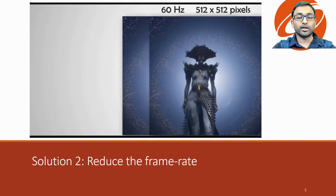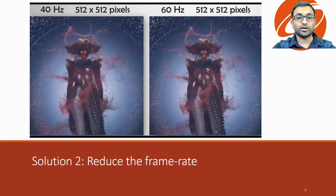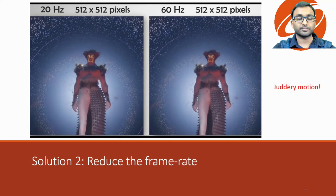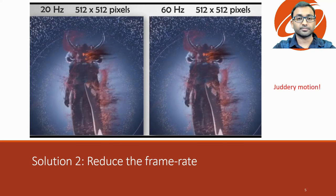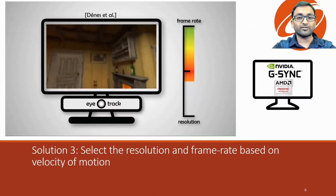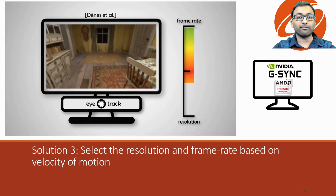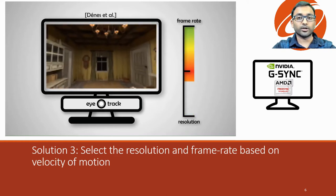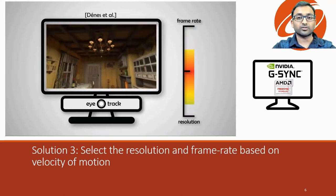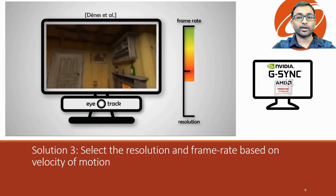Another popular solution is to reduce the frame rate. Though this will work well for still scenes, for dynamic scenes it can lead to juddery motion.